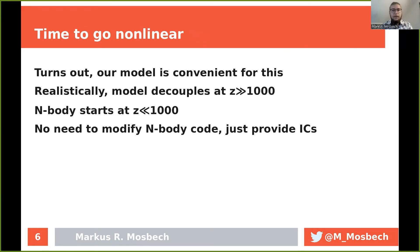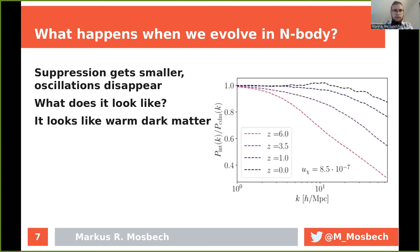It's time to go to non-linear scales if we want to put stronger constraints on this. Luckily, for values permitted by the data, the model decouples at very high redshifts. And if you want to run non-linear N-body simulations, you start these at still quite high but significantly lower redshifts. So we don't actually need to include our interaction in the N-body code — we just use it to set initial conditions.